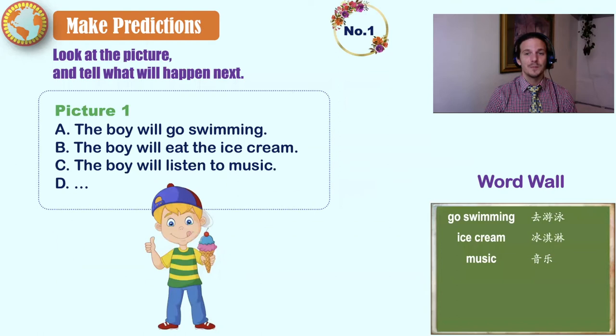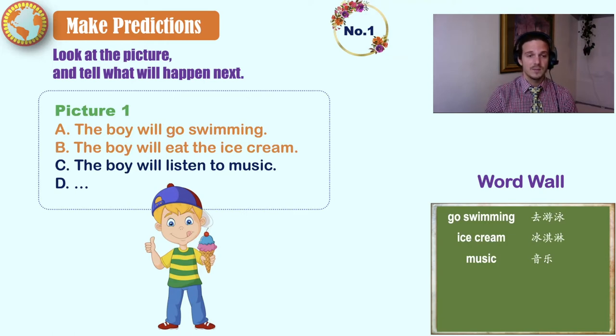Number one, important words to know are go swimming, ice cream, music. Now let's look at the picture. Do you think the boy will go swimming, the boy will eat the ice cream, the boy will listen to music, or the boy will go on a plane.